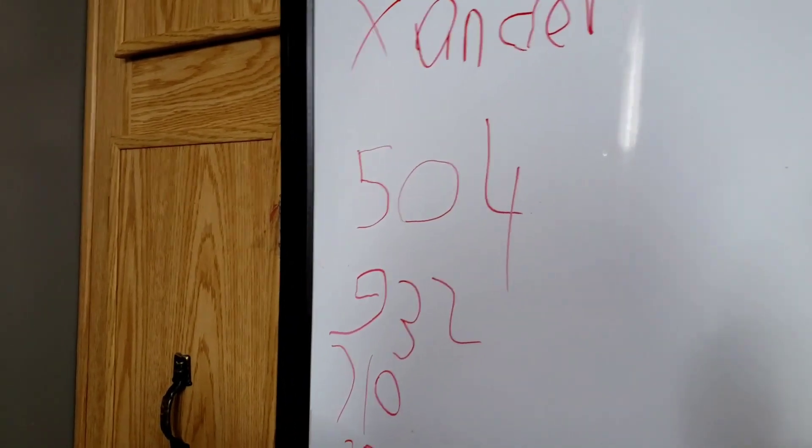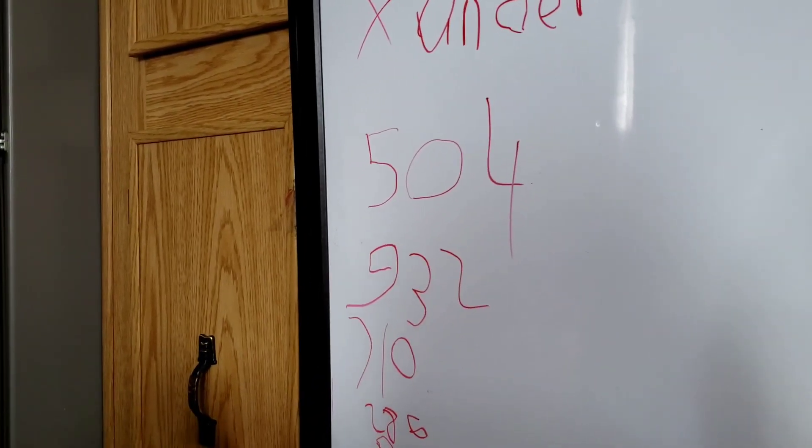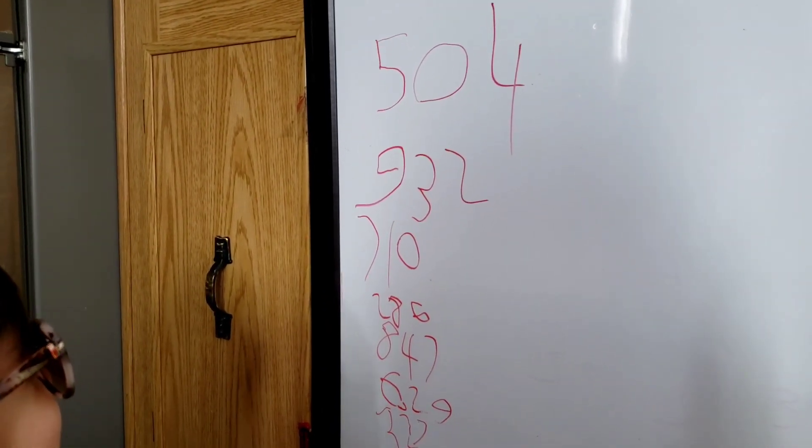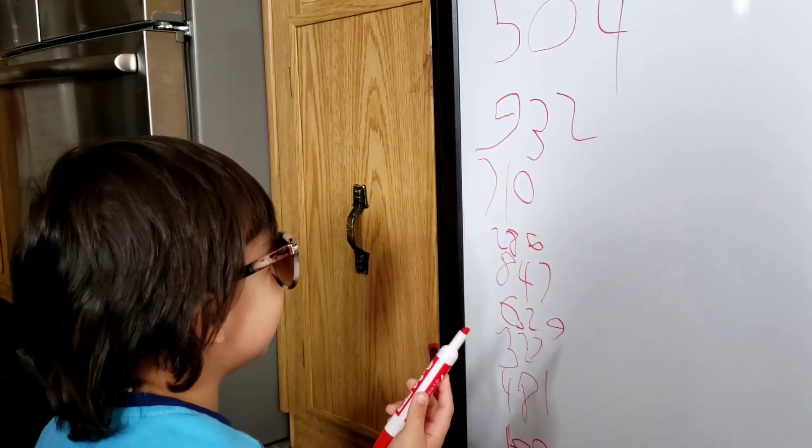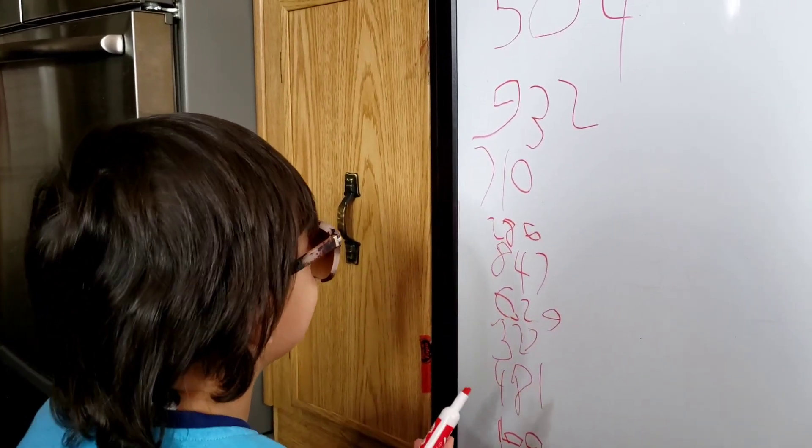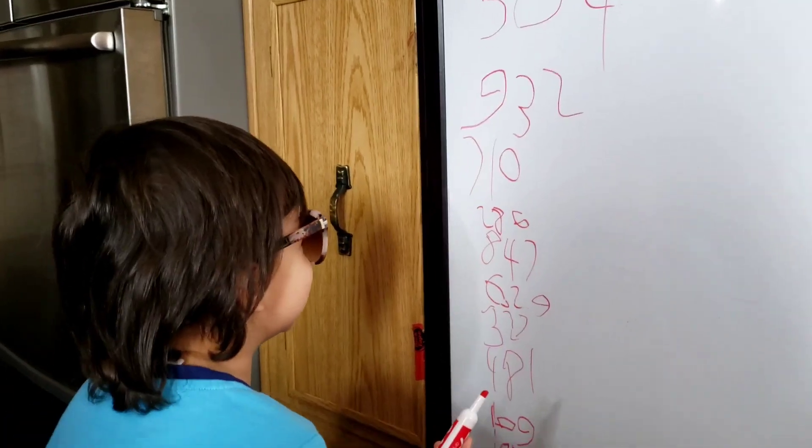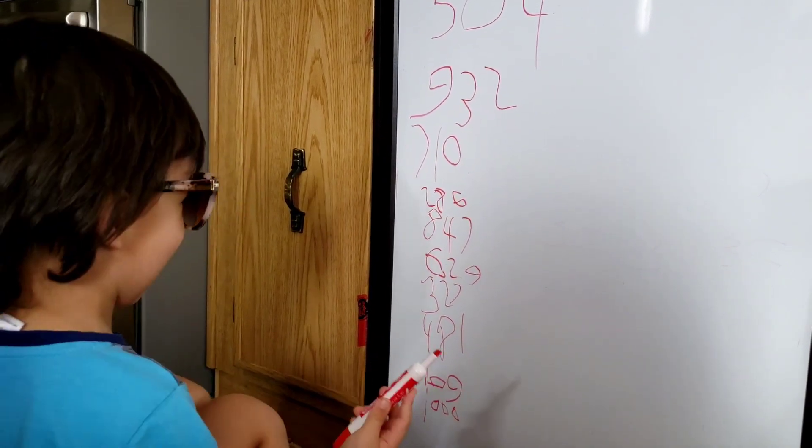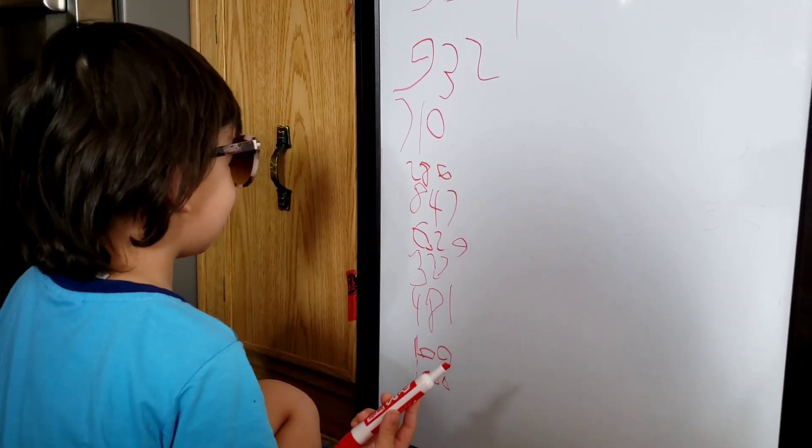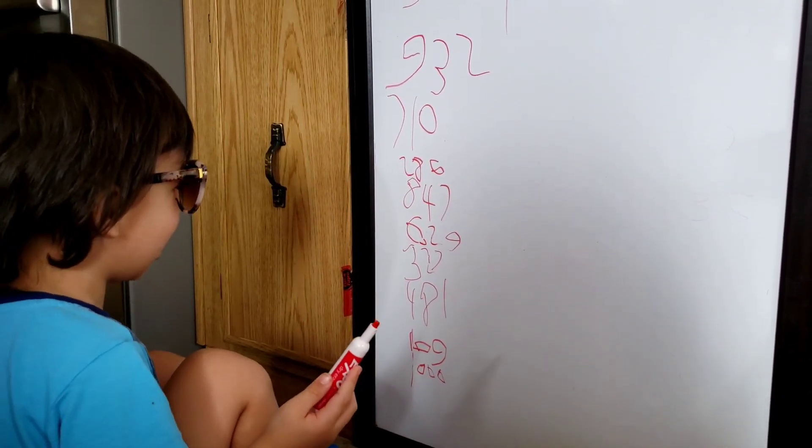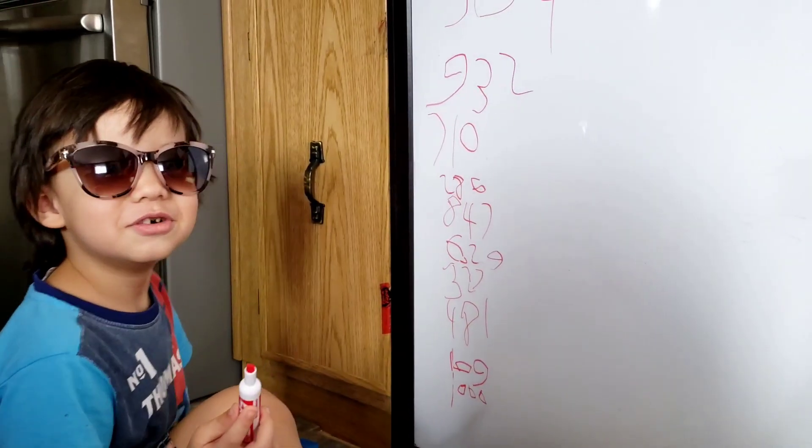Ready numbers. What number is that? 504. Next. 932. Next. 710. Next. 286. Next. 842. Huh? 847. Next. 229. Next. 327. Next. 481. Next. 109. Next. 1,000. Very good.